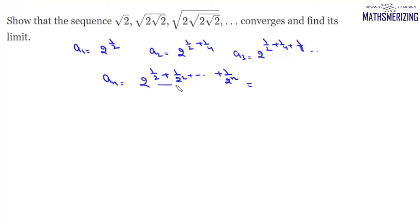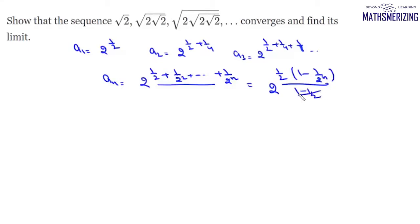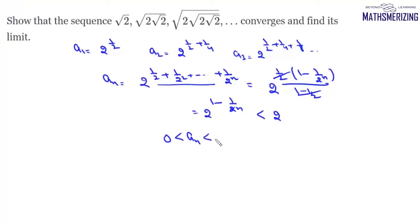The exponent is a geometric series, so we can write aₙ = 2^((1/2)(1 − 1/2ⁿ)/(1 − 1/2)). The 1/2 cancels, giving aₙ = 2^(1 − 1/2ⁿ), which is always less than 2. So we can write 0 < aₙ < 2, meaning this is a bounded sequence.